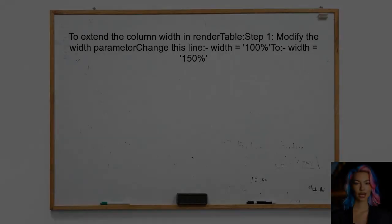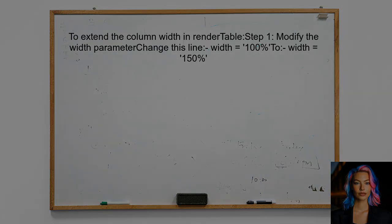To extend the column width in the render table function, you should modify the width parameter. Instead of using 100%, you can specify a larger value such as 150%.